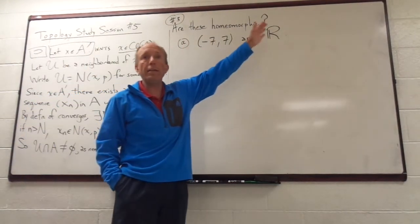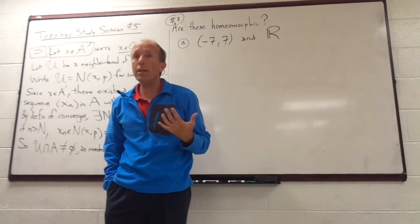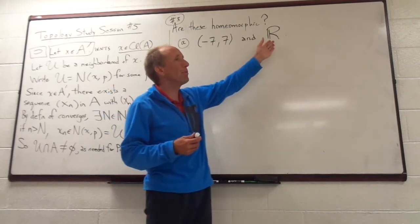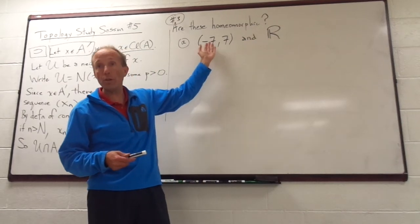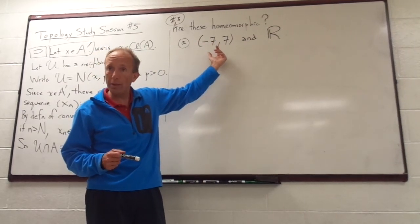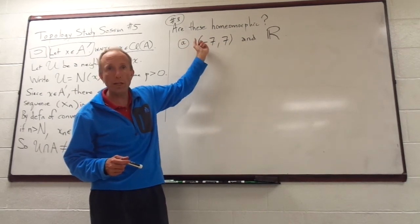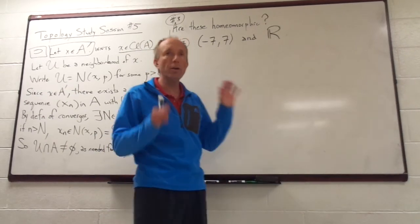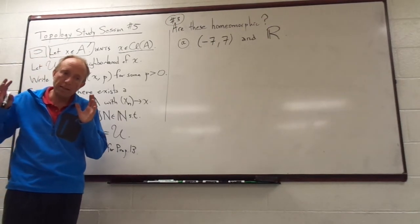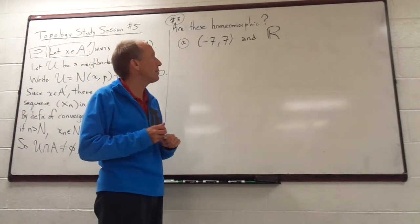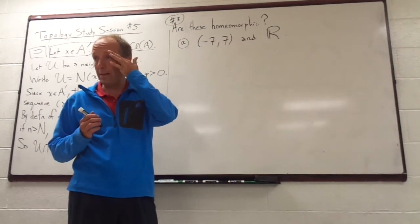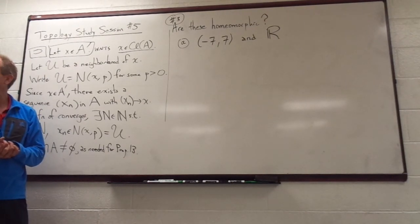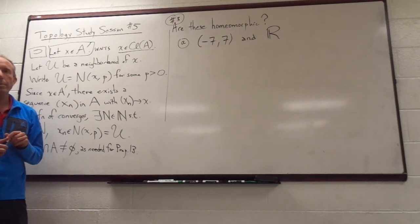I haven't stated the topology here, so if I don't state one, which do you assume? The absolute value metric — exactly, the real numbers with the absolute value metric. This is also a subset of the real numbers, so we're just going to use the subspace topology on this interval and compare. This would be a very good test question. Yes or no — are they homeomorphic? If not, give me a topological difference; if yes, give me a function showing the homeomorphism.